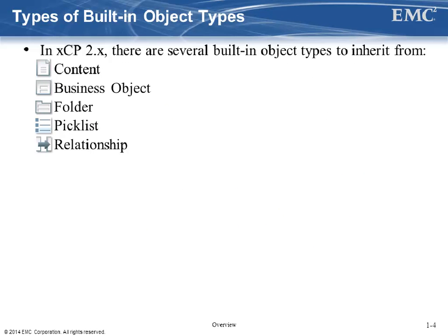In XCP Designer, there are several different object models to choose from. You can define custom EMC Documentum documents — in XCP 2, these are called content object models. You can define custom contentless object types — in previous products, these were sometimes referred to as structured object types, which are called business objects in XCP 2. Of course, you can define folders in the repository. You should know that when you define folders in XCP 2, the folder instances are not automatically created when you deploy the application. You either have to create them using a script, manually using DA, or a process action or function. Pick lists and relationships are two new object models that you can define.